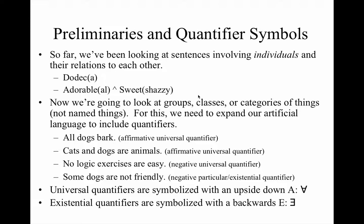Notice the difference with the last example: 'Some dogs are not friendly.' The first three examples use universals — 'All dogs bark' and 'No logic exercises are easy' state the universal explicitly, while 'Cats and dogs are animals' implies it. The existential claim 'Some dogs are not friendly' is a much more restricted claim. We can replace the quantifier 'some' with 'at least one,' giving us 'at least one dog is not friendly.'